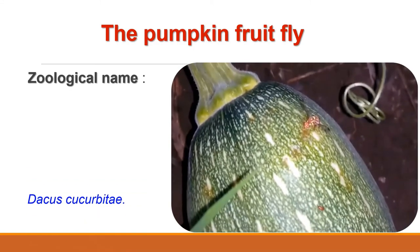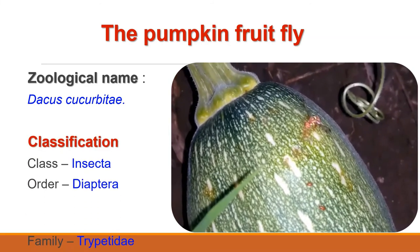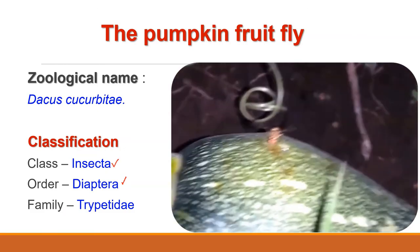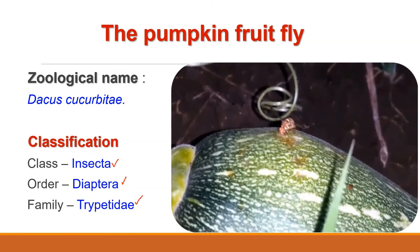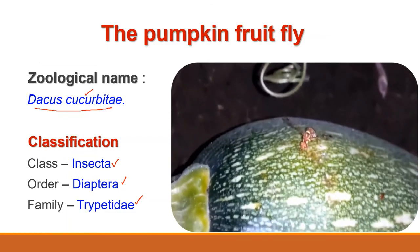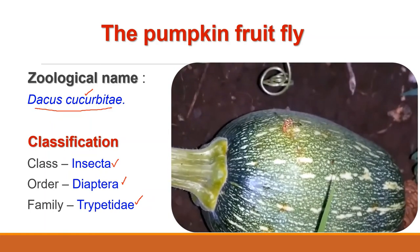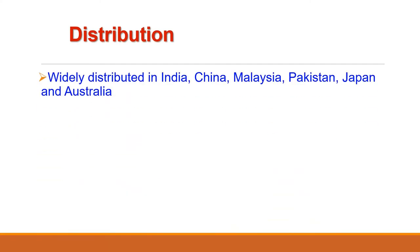The next pest is the pumpkin fruit fly. Its zoological name is Dacus cucurbitae. Regarding its taxonomic status, it belongs to class Insecta, order Diptera, family Tephritidae, genus Dacus and species cucurbitae. The Dacus cucurbitae was first observed in Hawaii Island in 1898, but since 1903 it has had a wide range of distribution in Australia, Burma, China, East Africa, India, Japan, Malaysia and Pakistan. In India, it is commonly found damaging vegetables and fruits throughout vegetable and fruit growing areas.